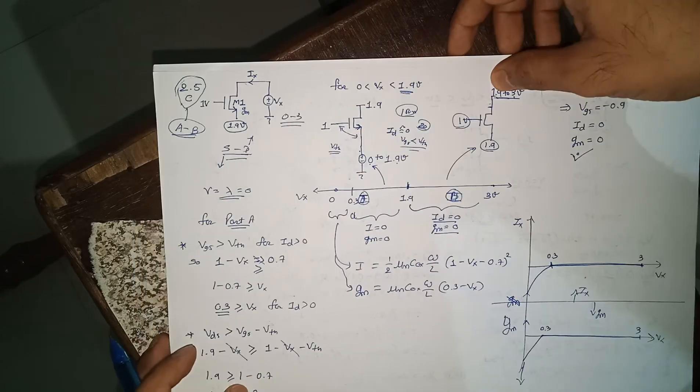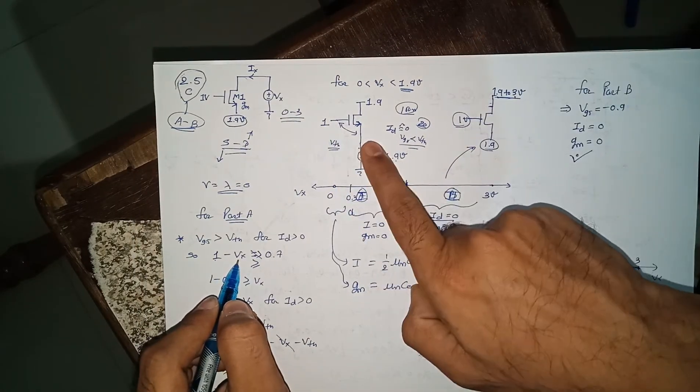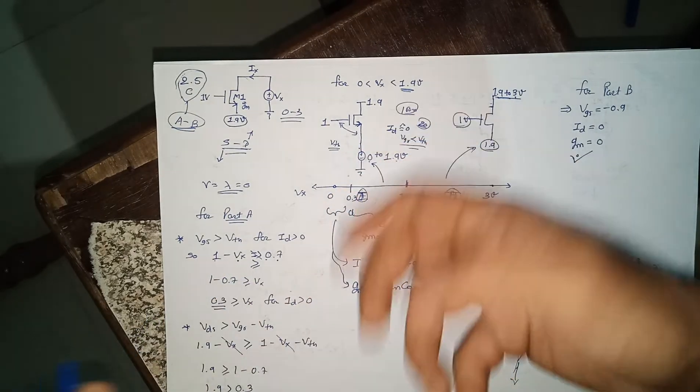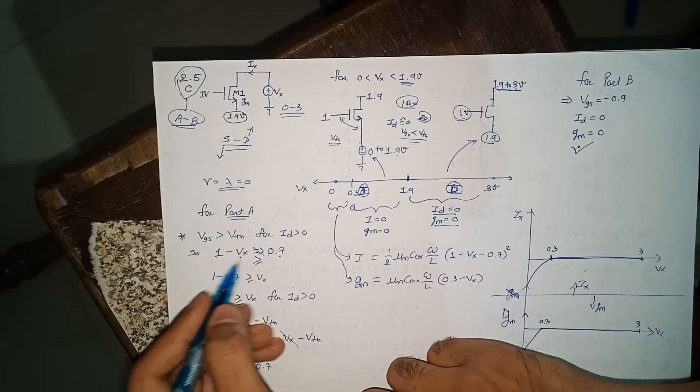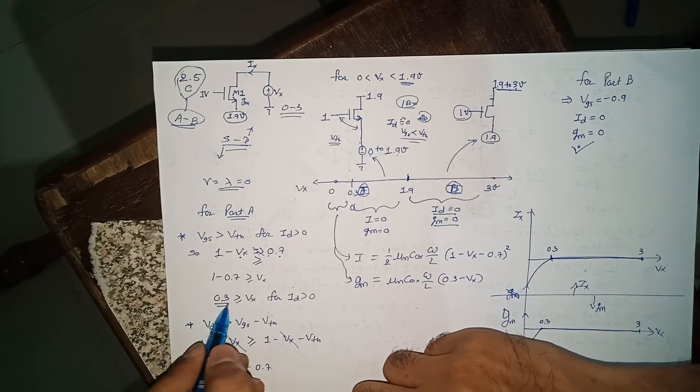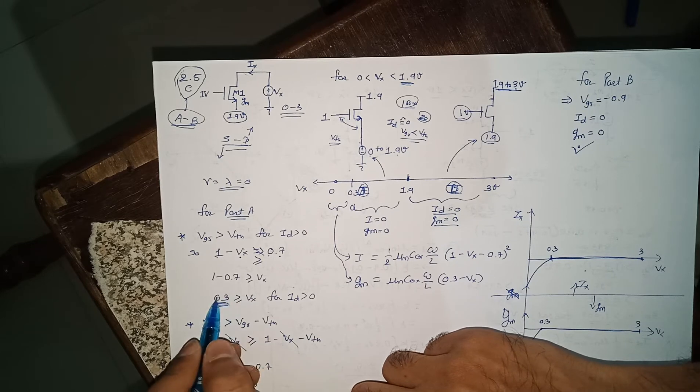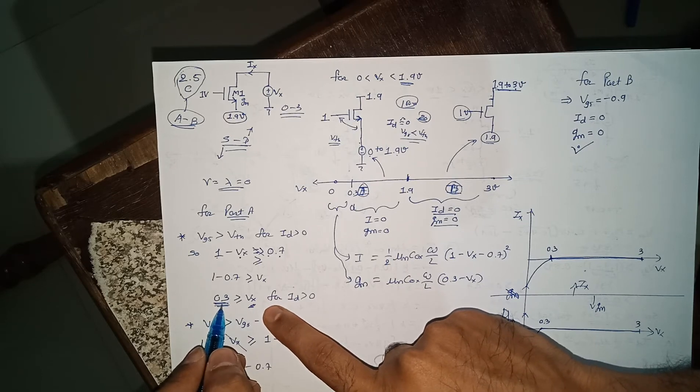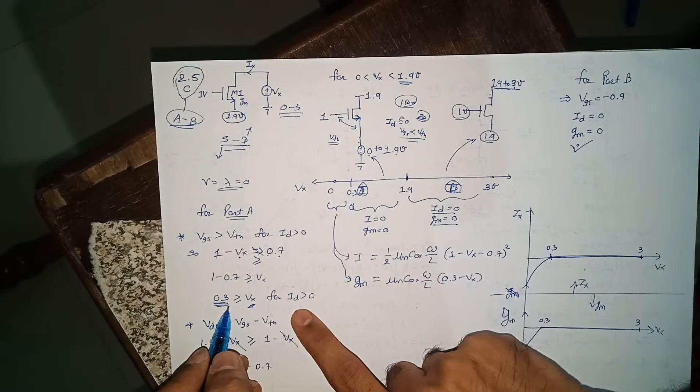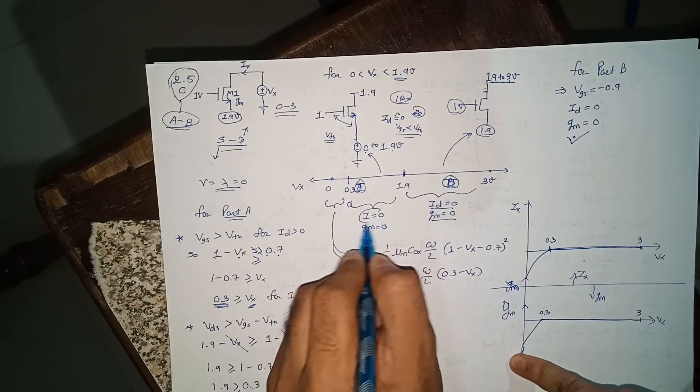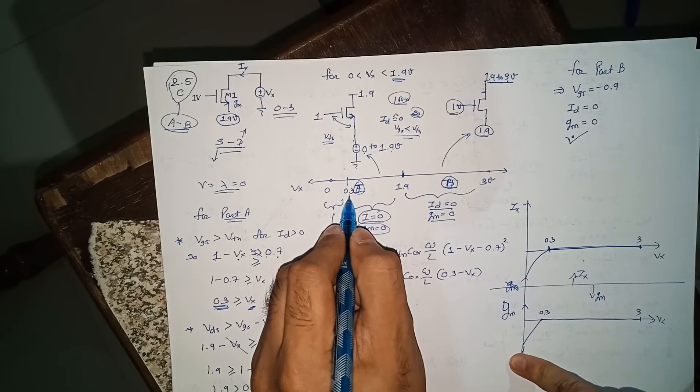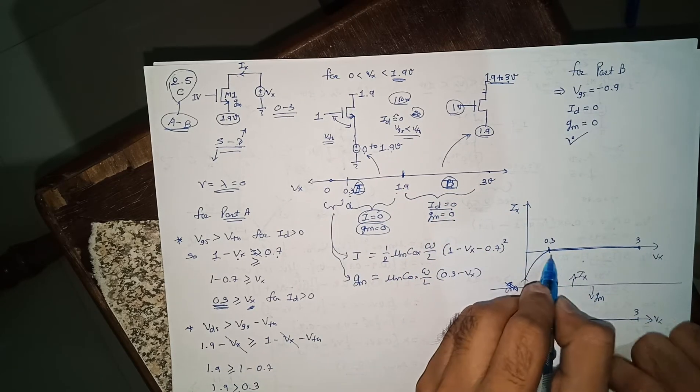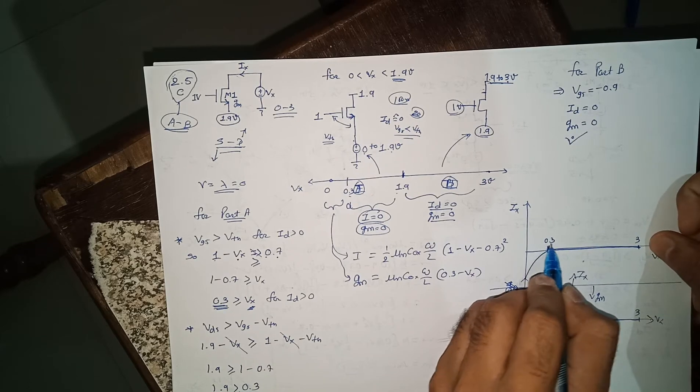That condition is basically 1 minus Vx, that is Vgs, will be greater than 1.7 for any current. So ultimately you will see Vx is less than 0.3, that means Vgs is higher than Vth will be having some current. Otherwise your current will be 0 and gm will be 0. From 0.3 to 1.9, remember this part is already having ID and gm both 0. So from this 0.3 voltage to 3 voltage, your current is 0, same way your gm is also 0.